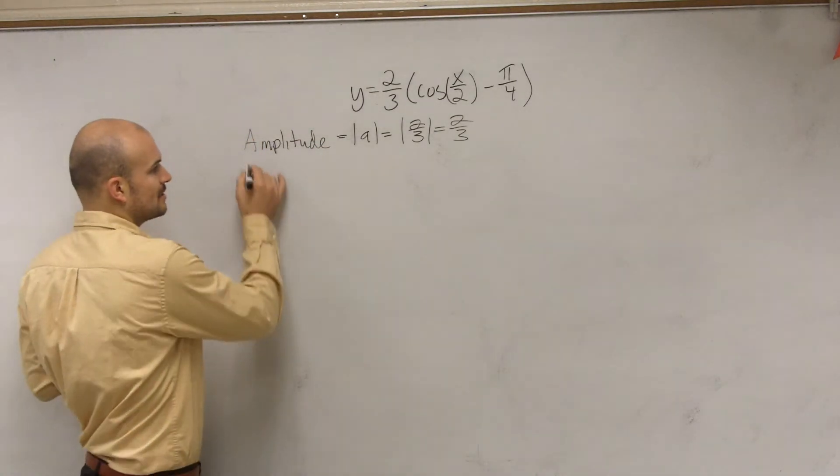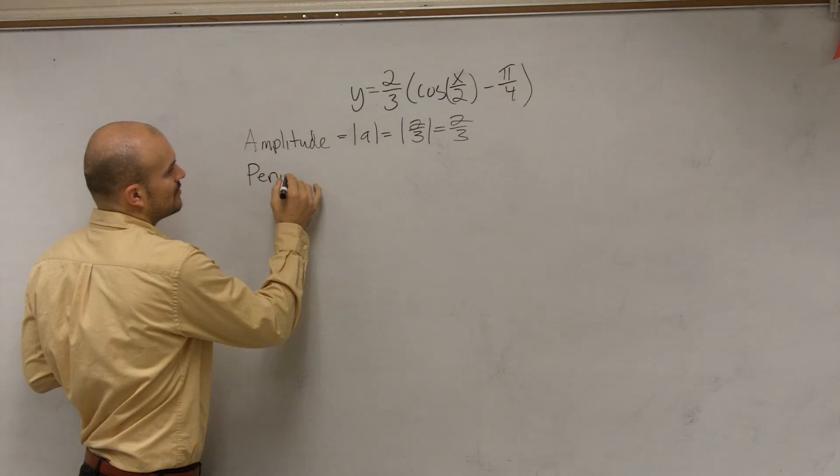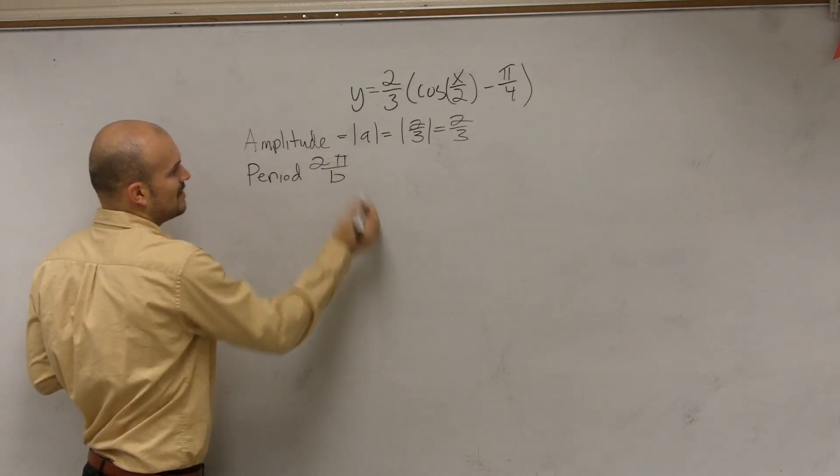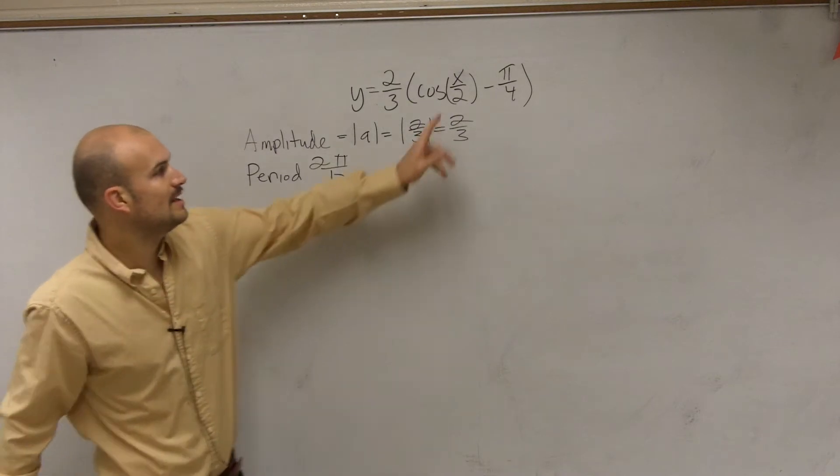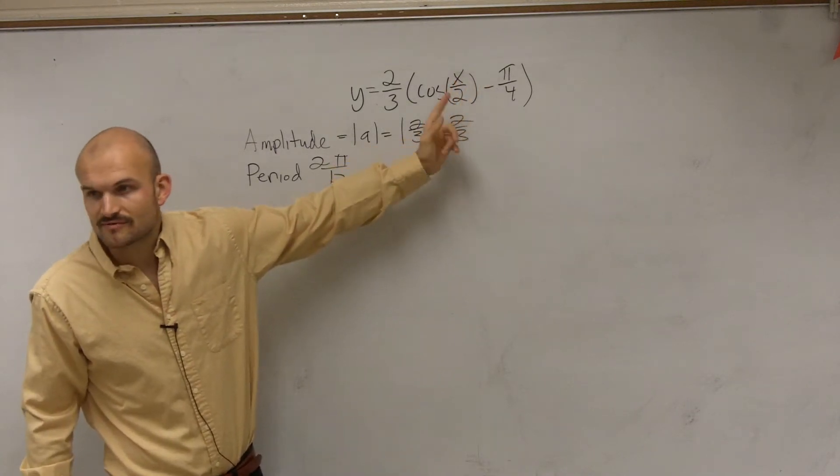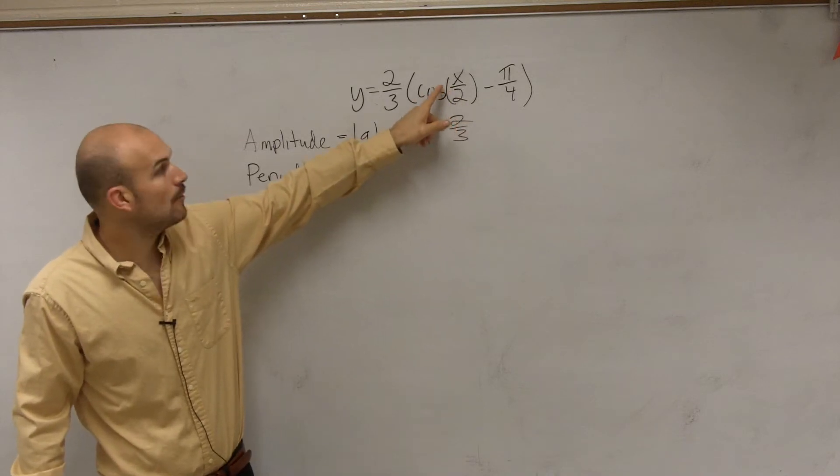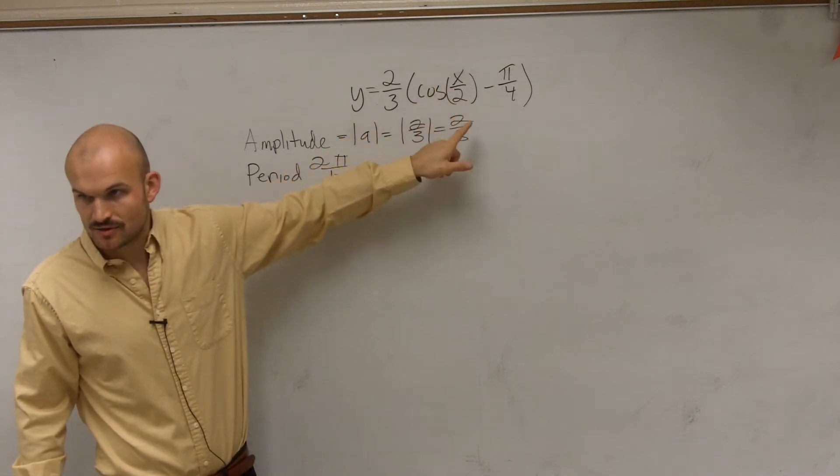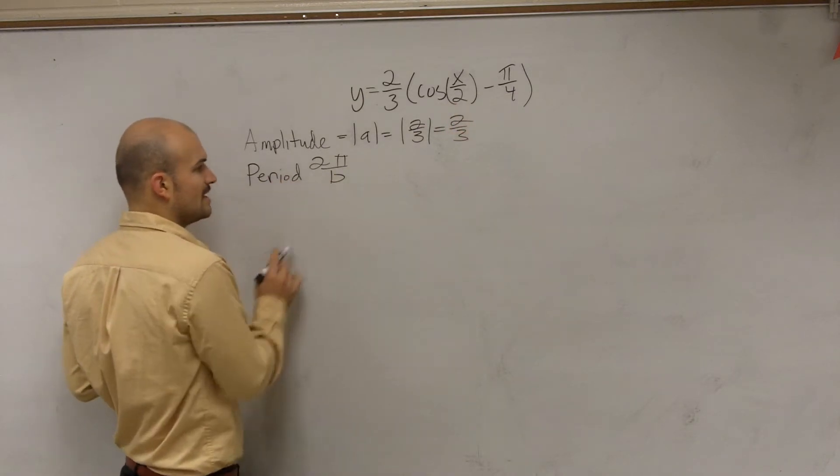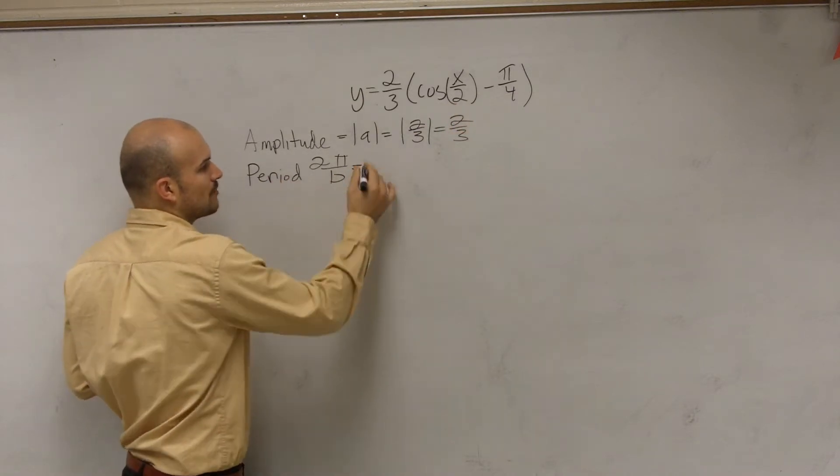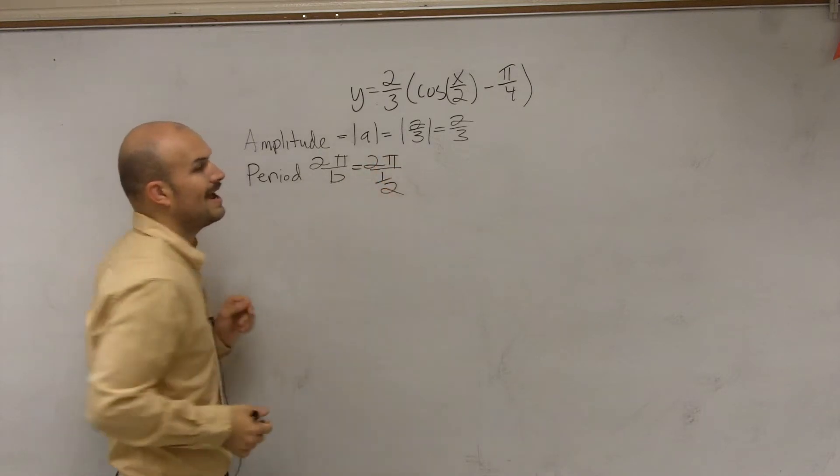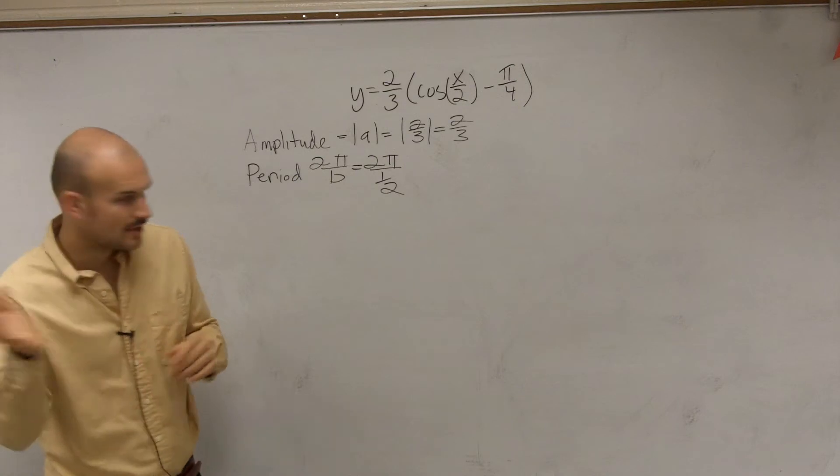The next thing I do is I take the period. The period, remember, is going to be two pi divided by B. So we take a look at our B and remember B is the coefficient of X. So you can say, what number is in front of X? We might say, well that's a one. Well that one is being divided by two. So you gotta be very careful and notice that even though your period, there's a one in front of there, it's actually two pi divided by one-half.